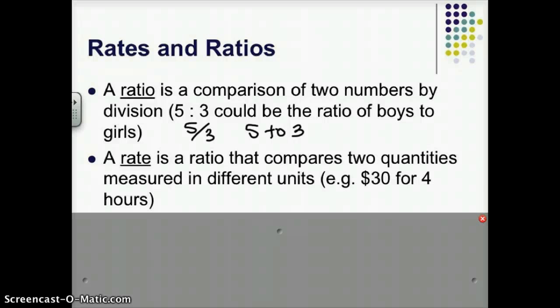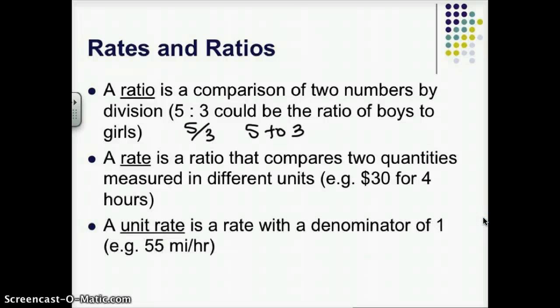A lot of times when we're looking at rates, we like to look at the unit rate. So that's a rate with a denominator of one. For example, when you're driving, it might be 55 miles per hour. If we look at this problem above, $30 for four hours, we could divide 30 divided by 4 to get that our unit rate is $7.50 per hour. That would be a unit rate when you're going per one.